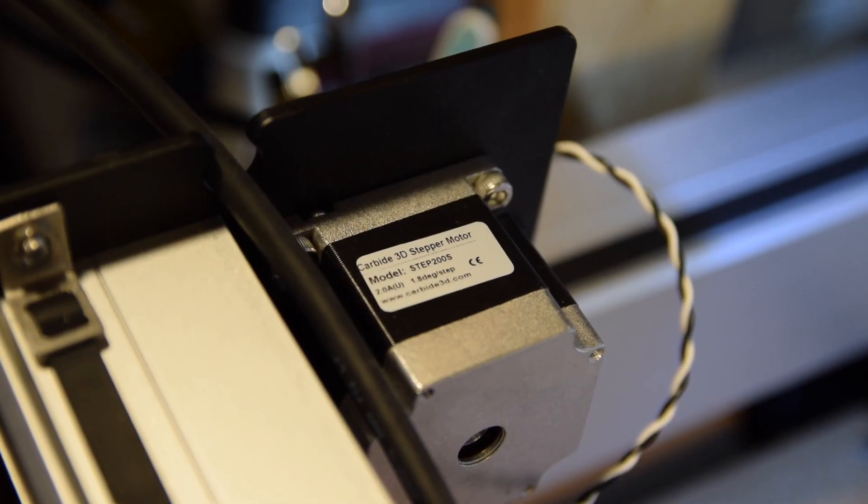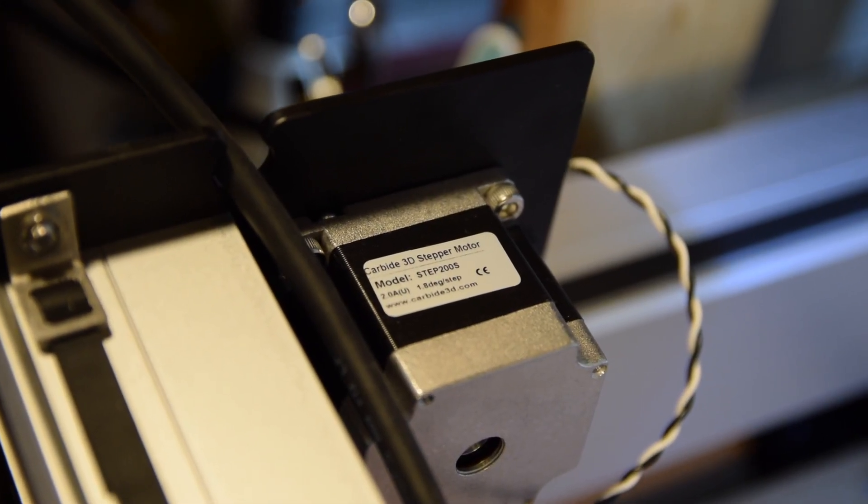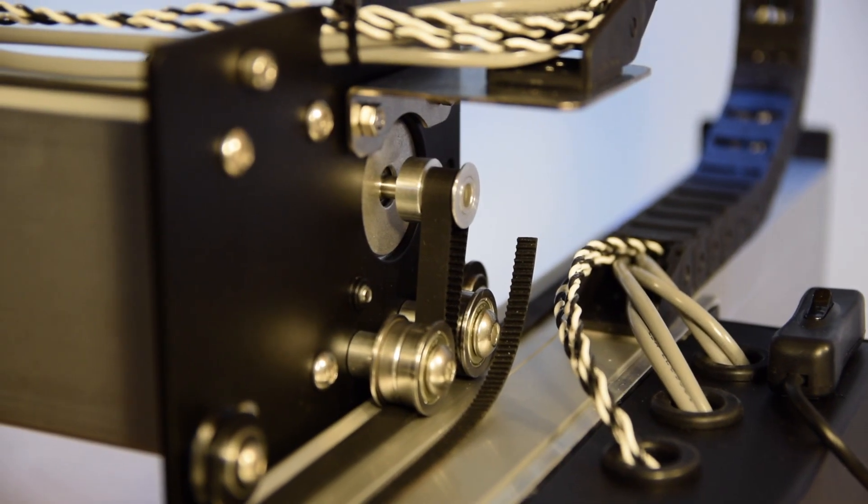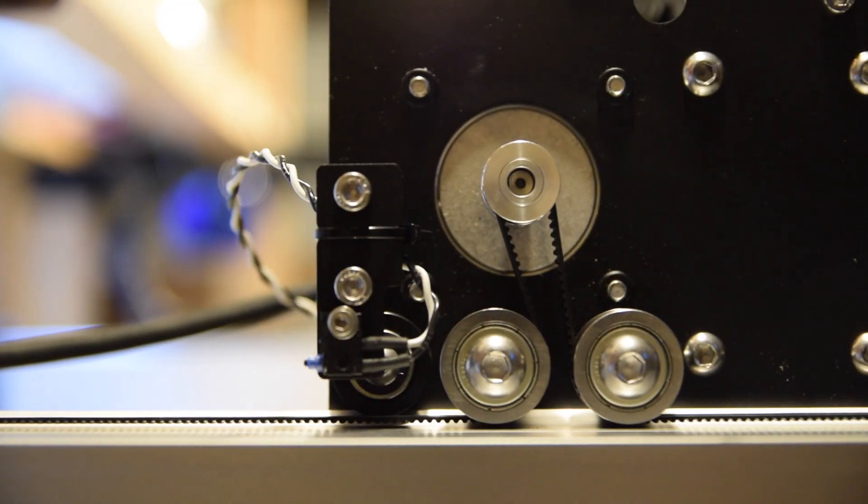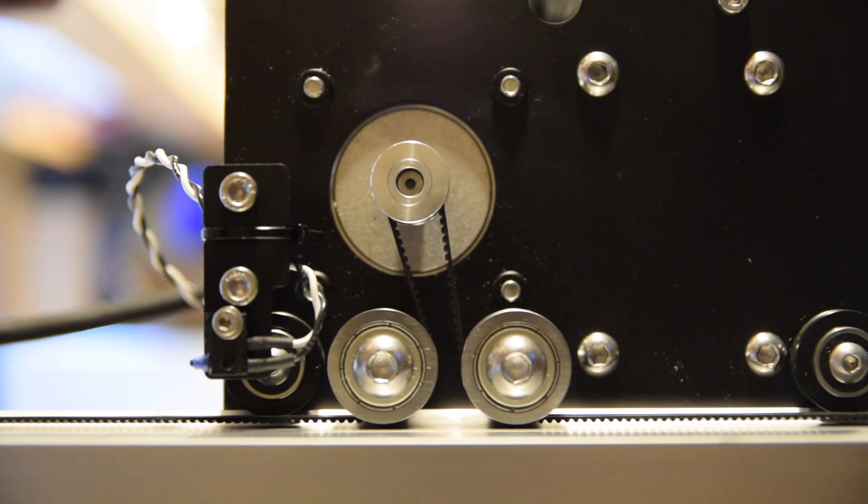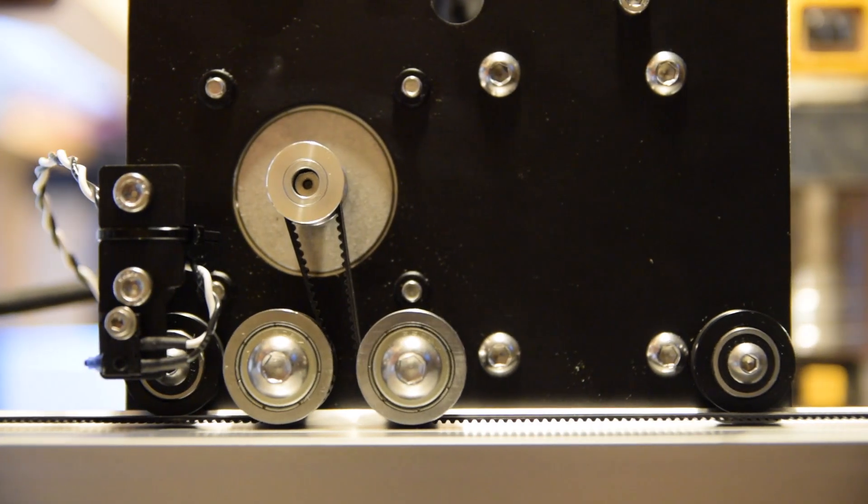To move itself along each axis, the Shapeoko employs stepper motors and pulleys. The stepper motors make calculated rotations that translate into whatever linear distance of travel is commanded.